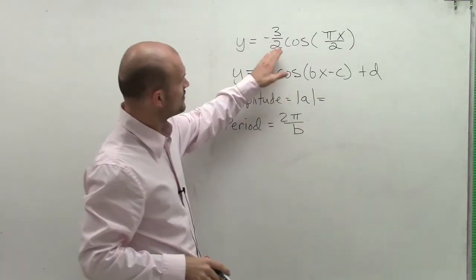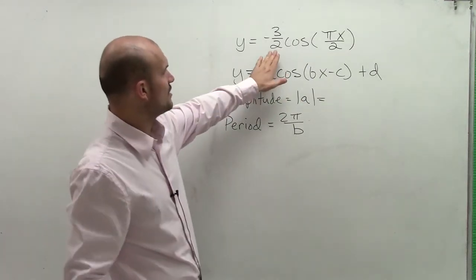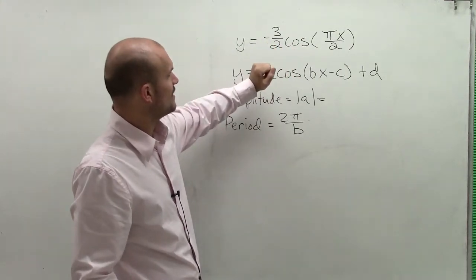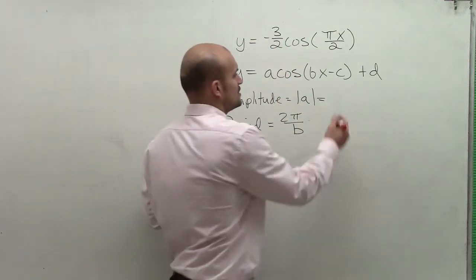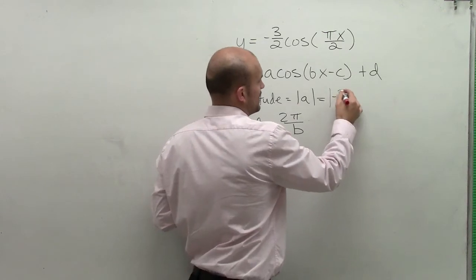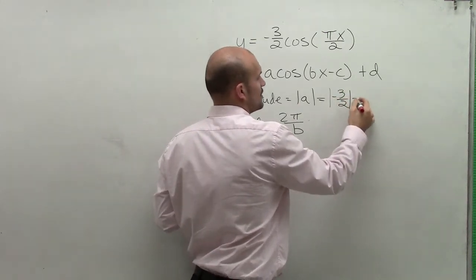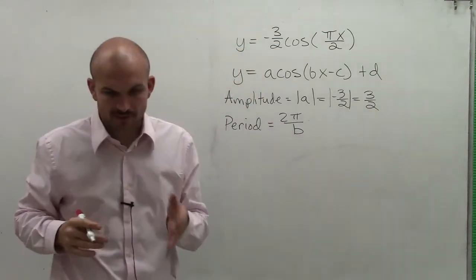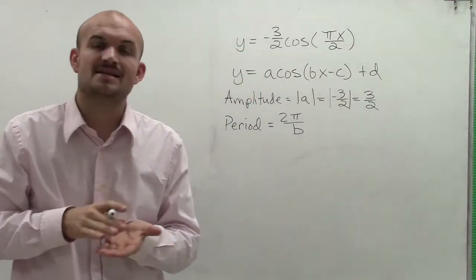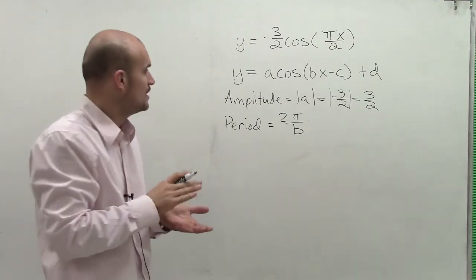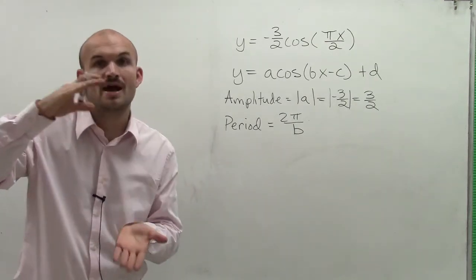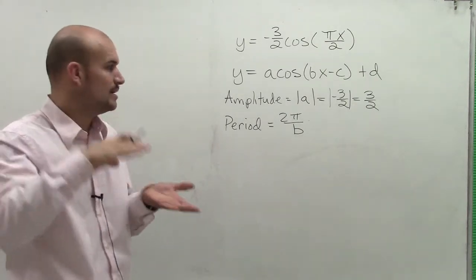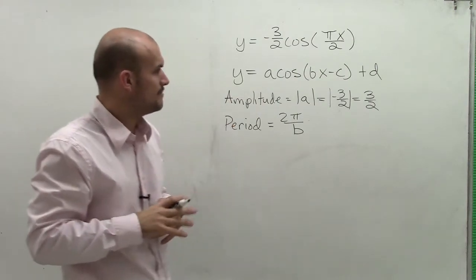So when we look at this, we look at what is the number being multiplied by my function. We have negative three-halves cosine. So to take the absolute value of negative three-halves, we end up getting three-halves. Therefore, my amplitude has a distance of three-halves from the center to its maximum or minimum.